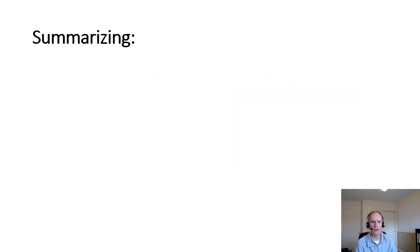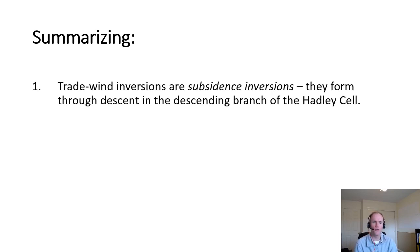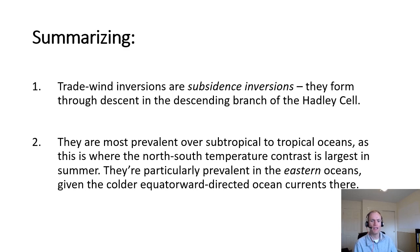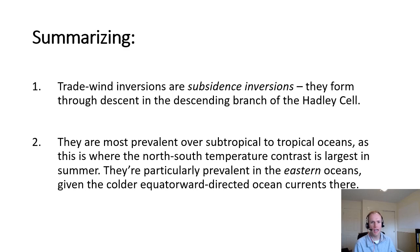Putting it all together: trade wind inversions are subsidence inversions that form through descent in the descending branch of the Hadley cell. The Hadley cell is driven by diabatic heating, so just as diabatic heating drives tropical circulations, it also drives the formation of the trade wind inversion. These inversions are most prevalent over subtropical to tropical oceans, particularly the eastern portions where cooler ocean currents extend from higher latitudes toward the equator. They are especially prevalent during summer because the temperature difference between the equator and the subtropical oceans is greatest then; in winter the oceans are still relatively warm from the preceding summer and fall, so the temperature difference is not as large.